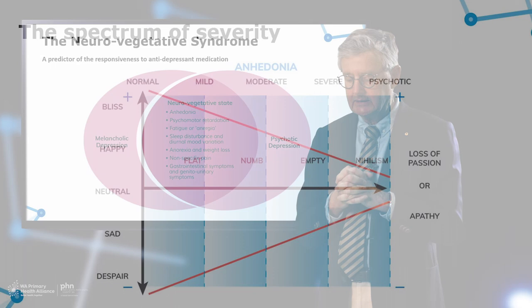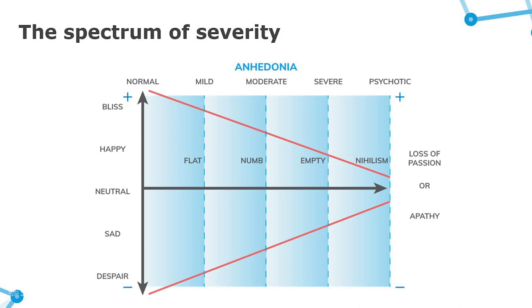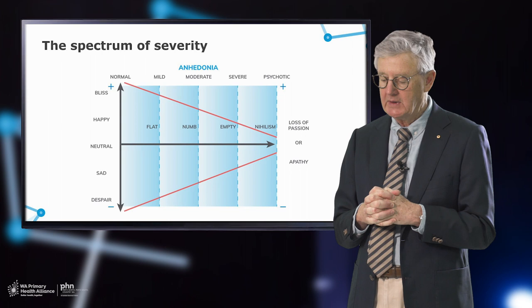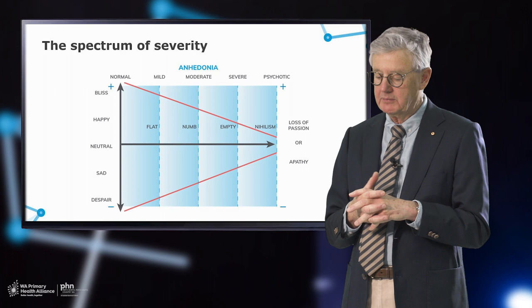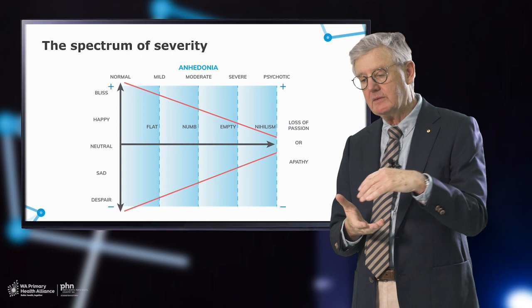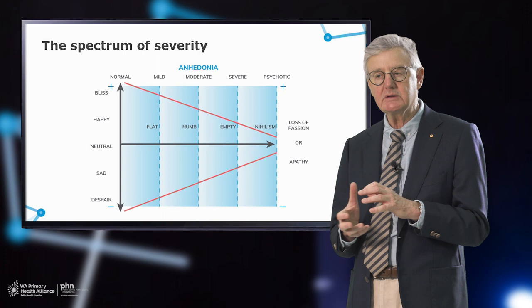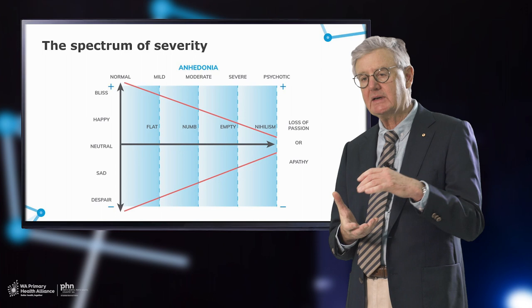Using anhedonia as an example: the spectrum of severity still exists even within the melancholic classification. You can have mild, moderate, and severe — and with the melancholic group, a psychotic picture as well. We see a spectrum of mood and capacity for positive and negative emotions that slowly drifts down to apathy. It's not just about the inability to experience pleasure — it's the inability to experience emotion generally, contracting down to virtually nothing as the illness gets more severe.